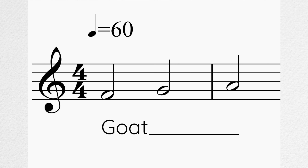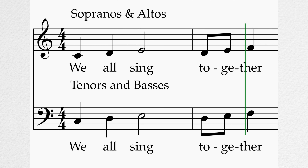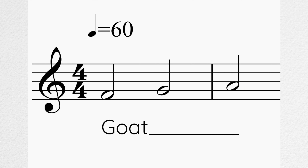The default position for lyrics is below the stave, or in the case of condensed choral arrangements, between the two staves. But lyrics can be displayed above or below the stave, depending on which musical line it corresponds to. Let's start with one part — this could be the entire choir singing in unison, or just a single section — the point is everyone is singing the same words at the same time.